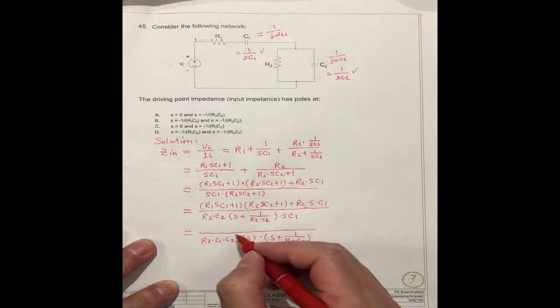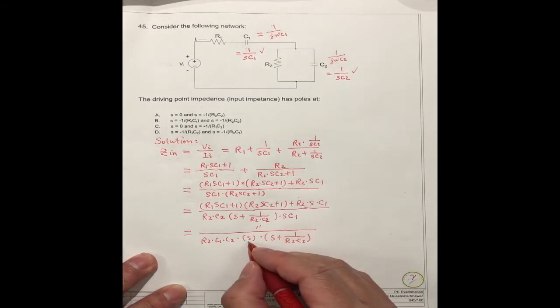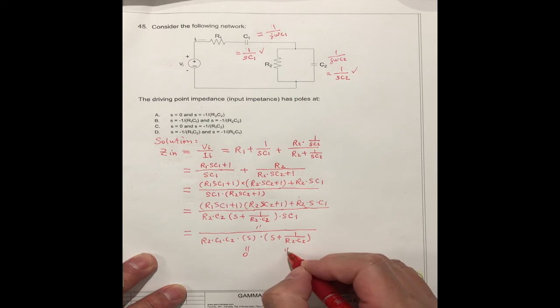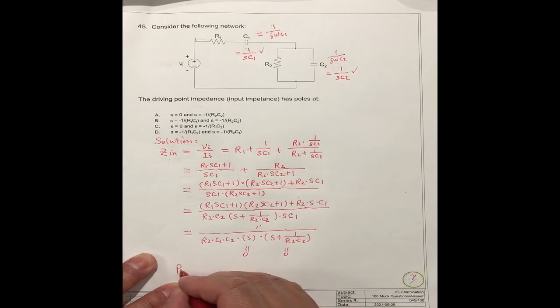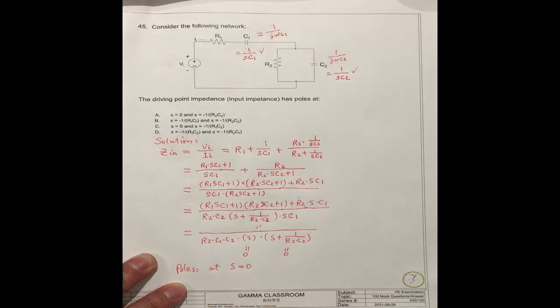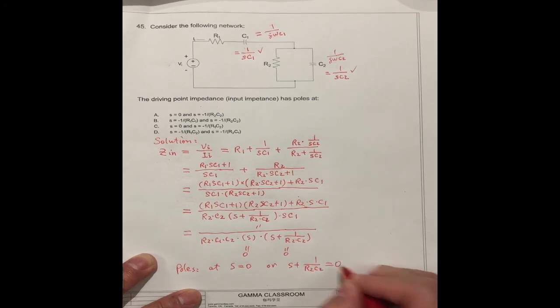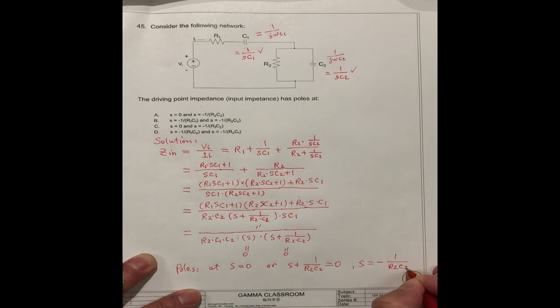And the numerator should be the same, R2C1. So only if S equals 0, or this one equals 0, then we can get the pole. So the pole is at S equals 0, or S + 1/(R2C2) equals 0, and S equals -1/(R2C2).